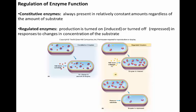A constitutive enzyme is one that is always present in pretty much constant amounts within the cell, no matter how much substrate there is. This is an enzyme that is continuously needed — it's always made, always on, always working, and the amount doesn't vary much. But in a regulated enzyme, we can actually turn the enzyme on or off in response to changes in substrate levels. So regulated enzymes are going to be turned on and off as needed.